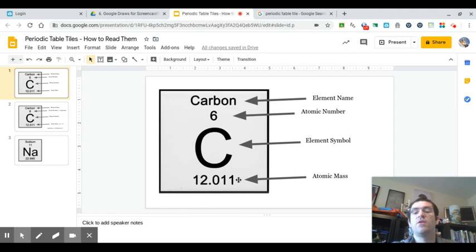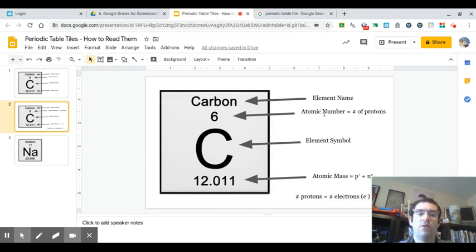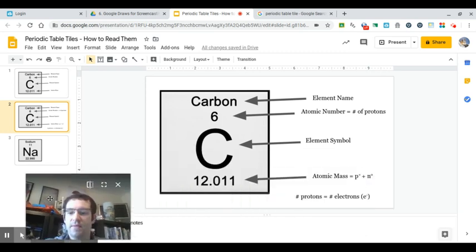Let's talk about what these values actually mean. One thing that they like to be able to do for you guys is using the periodic table tile, you should be able to tell me the number of protons, neutrons, and electrons in a normal atom of that element.